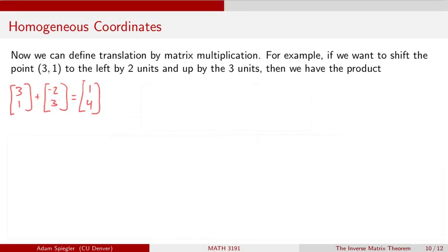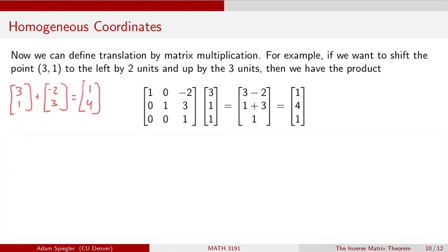If instead we introduce homogeneous coordinates, so instead of representing this point as 3, 1, we represent it as 3, 1, 1. We add this extra coordinate 1. Then our matrix for this translation, we're going to have the identity matrix. But the horizontal translation, I enter as the first value, the first entry in the third column that we're adding to this matrix.